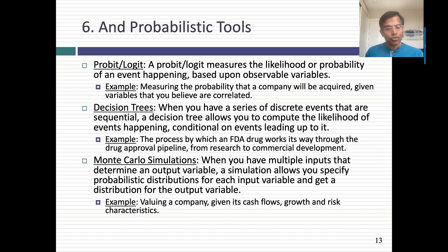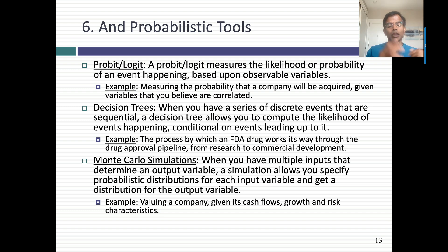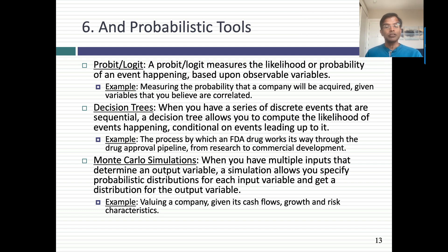If your risks are discrete — a classic example is a drug company putting a drug through the three-stage FDA approval process, where it either passes or fails each stage — one useful tool is a decision tree, where you look at a sequence of events and the likelihood of each happening. A more expansive use of probabilities is to put distributions in for input variables like growth and risk in cash flows, and see what the value looks like as an output variable. From data collection all the way to probabilistic tools, we're talking about statistics and probability.